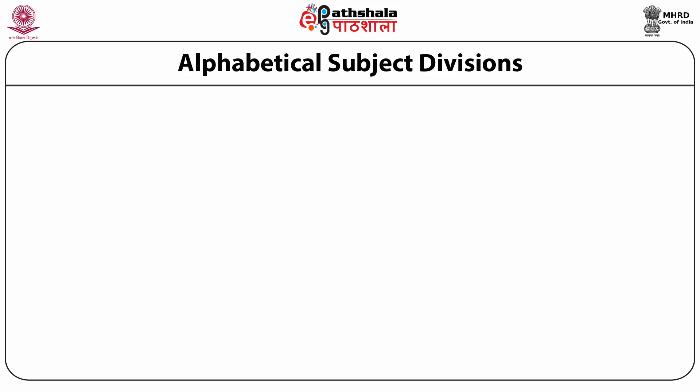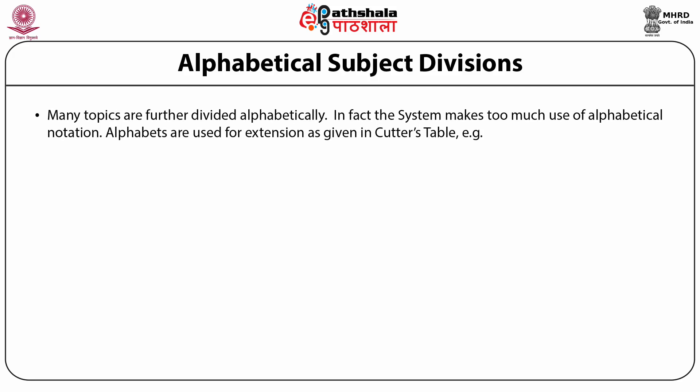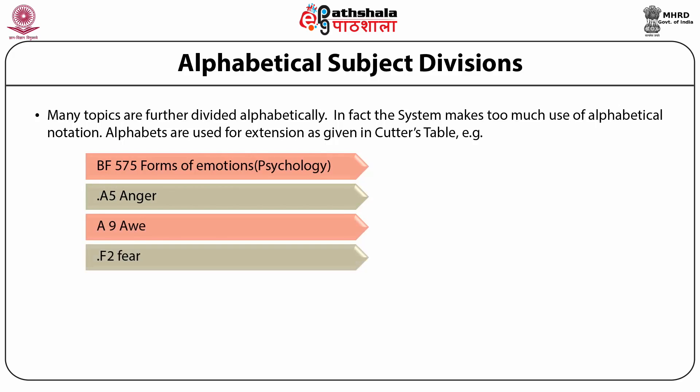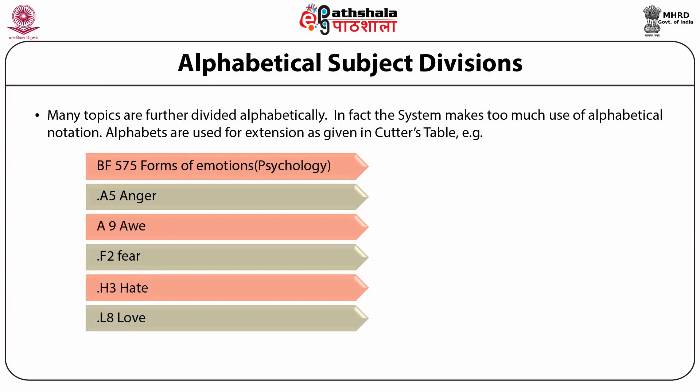Alphabetical subject divisions: It will be noted that further divisions of alphabetical notation may be by alphabets, which are mnemonical in use. In this way, the Library of Congress makes very good use of division by alphabets or alphabetical device. Many topics are further divided alphabetically. In fact, the system makes too much use of alphabetical notation. Alphabets are used for extension as given in the Cutter's table, and this makes the classification very hospitable. For example, BF575 — Forms of Emotions in Psychology. Then emotions are further divided alphabetically: A5 Anger, A9 Awe, F2 Fear, H3 Hate, L8 Love, and so on.